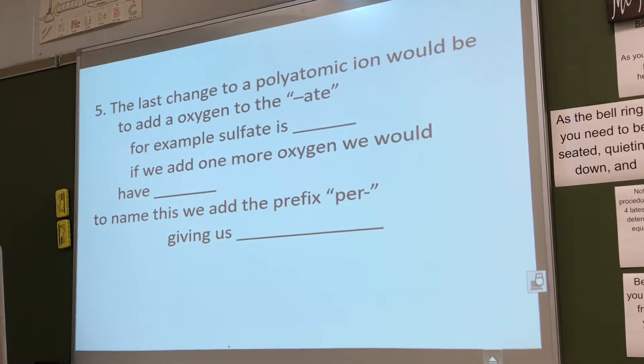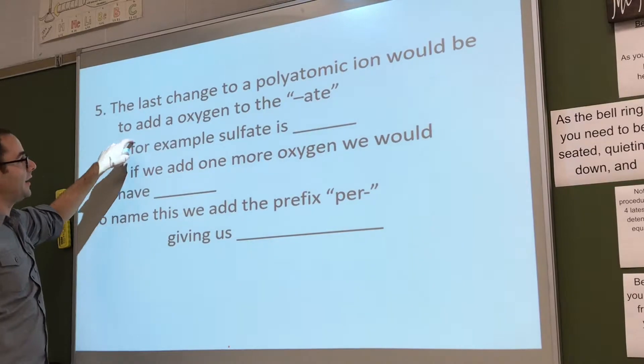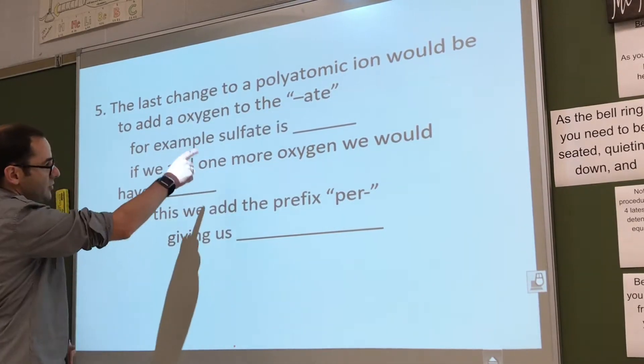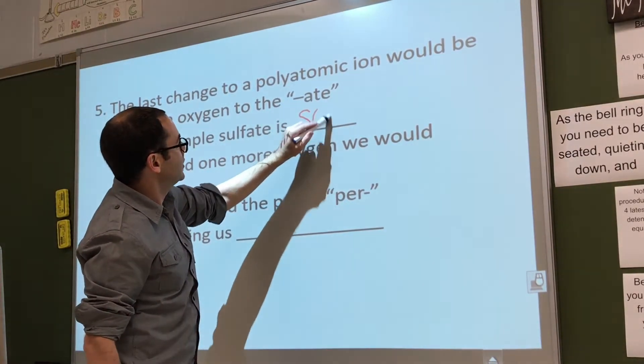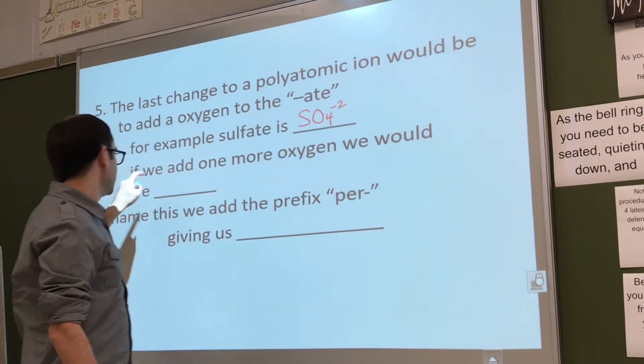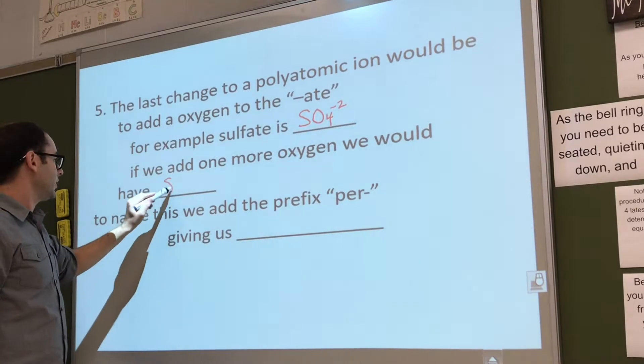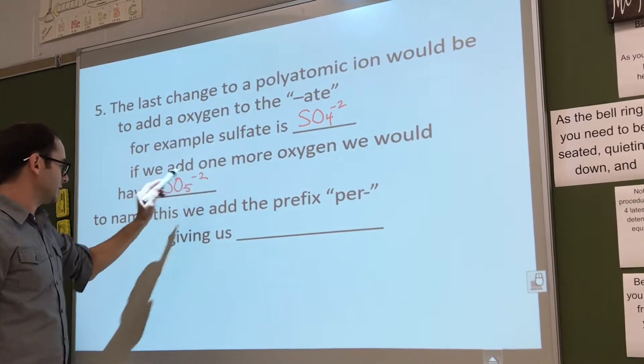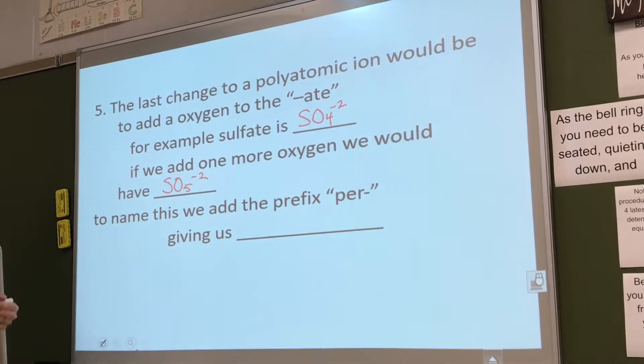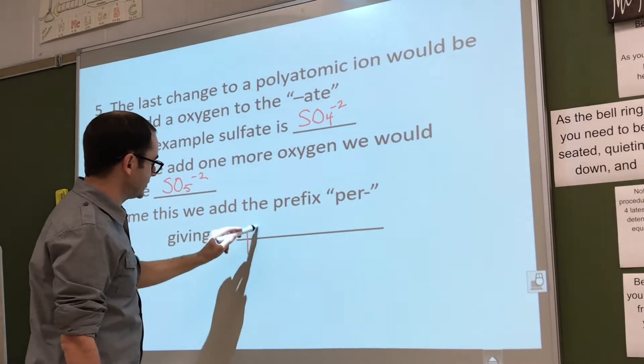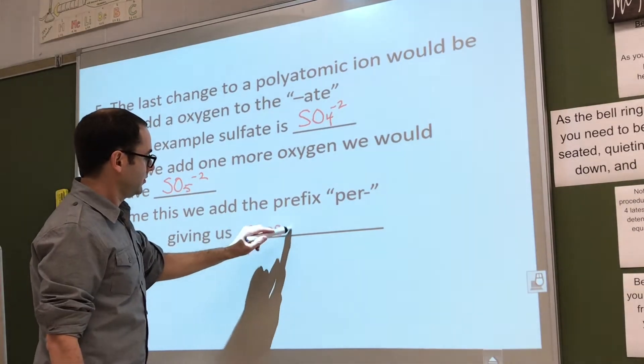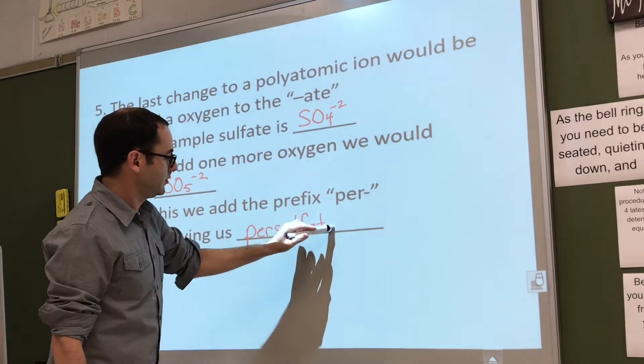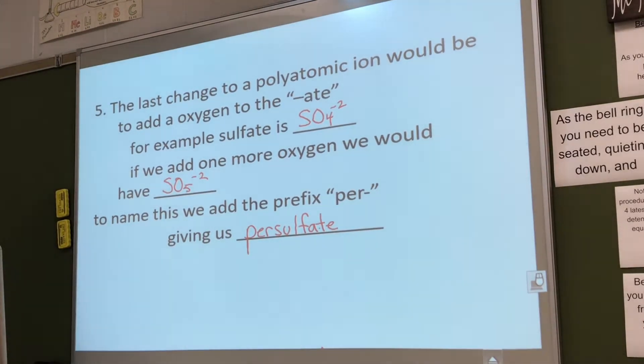The last change to the polyatomic ion would be if you add an oxygen to the -ate one. Sulfate, we know, is SO4 minus 2. If we add one more oxygen, we would have SO5 minus 2. To name this, we add the prefix per, giving us persulfate. You can have three extra options for most of the polyatomic ions. That adds a little bit of complexity to our naming.